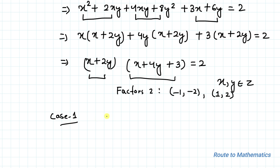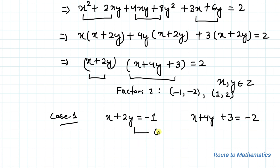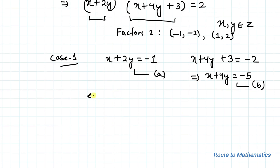Case 1: Let x + 2y = −1 (equation a) and x + 4y + 3 = −2, which implies x + 4y = −5 (equation b). We'll use the elimination method: multiply equation a by 2 to get 2x + 4y = −2.